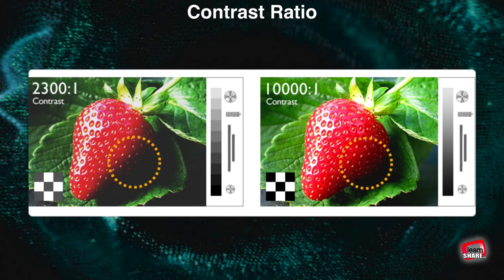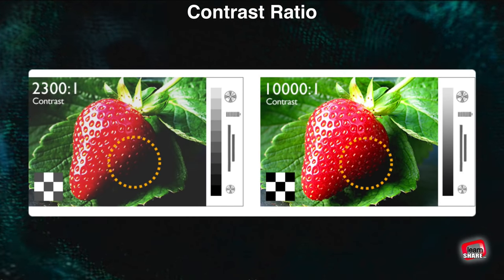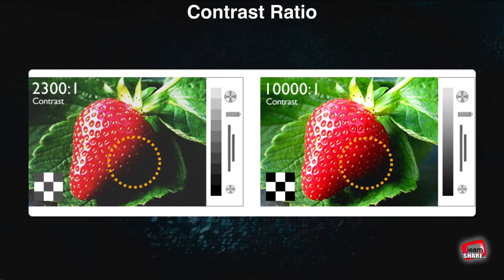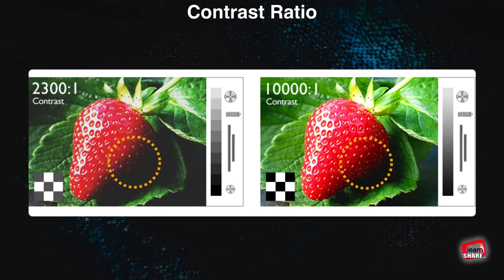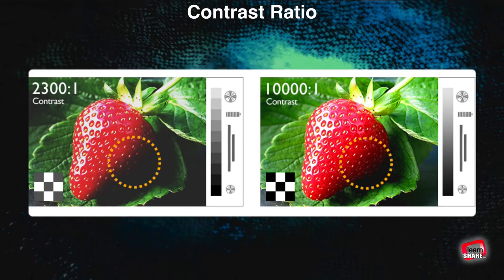Contrast ratio is basically a calculation of the difference between a screen's deepest black and brightest whites, written for instance as 10,000 to 1. But now few TV brands are quoting contrast ratios.